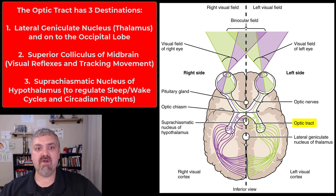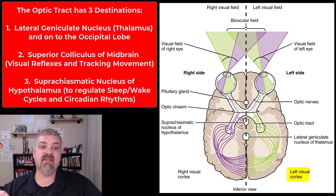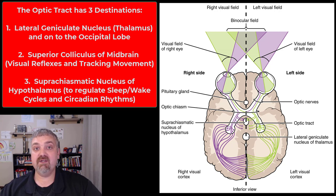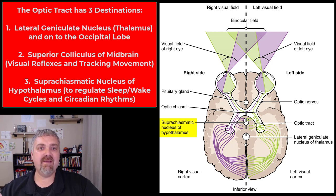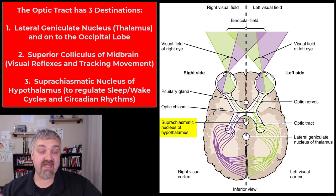The optic tract carries information from the eyes to three different locations. Most of it goes to the thalamus — specifically the lateral geniculate nucleus — which is the relay center that sends information on to the visual cortex in the occipital lobe. Some information also goes to the superior colliculus, which helps track movement and moving targets. Lastly, a very small number of retinal ganglion cells project to the suprachiasmatic nucleus of the hypothalamus. These cells don't perceive images — they're photosensitive and detect light presence or absence, telling the hypothalamus what time of day it is and setting your circadian rhythms.